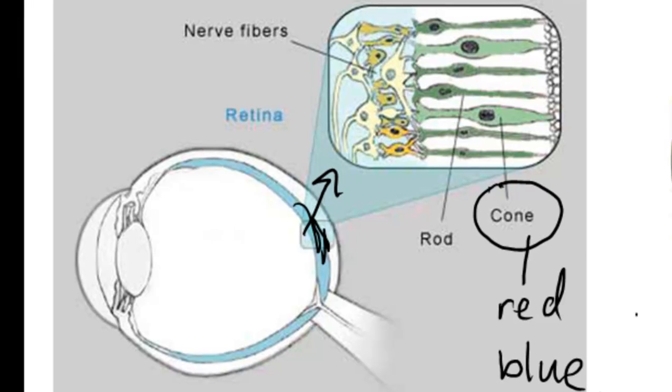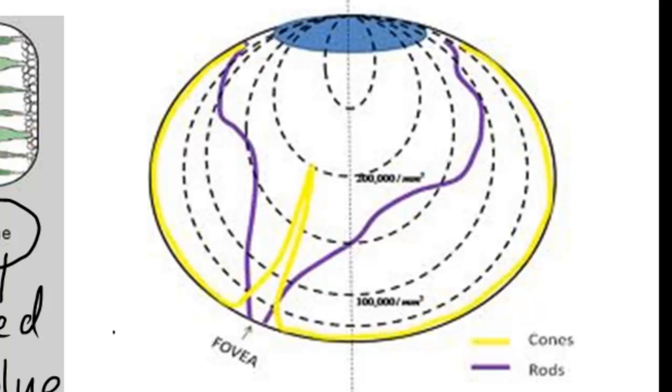So cone photoreceptors really work really well in bright light, which is why we don't see colors very clear at night.